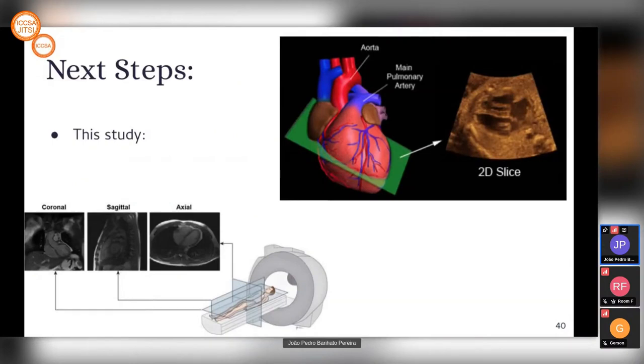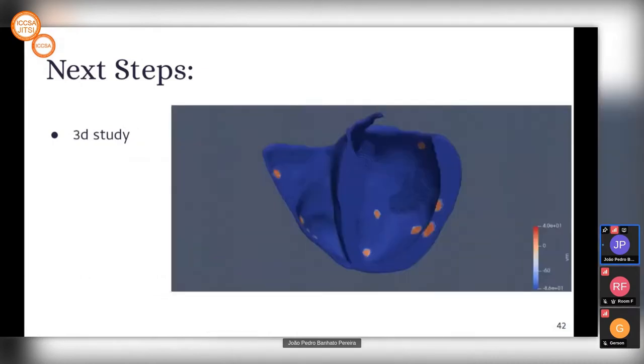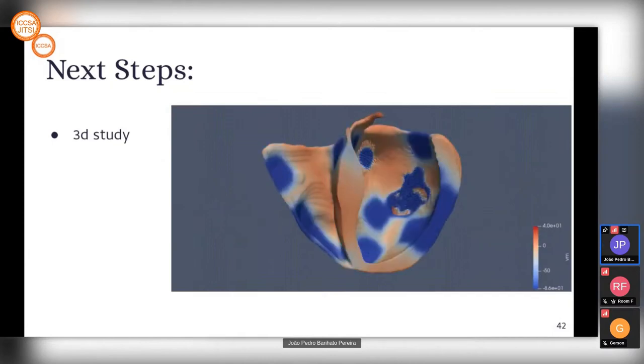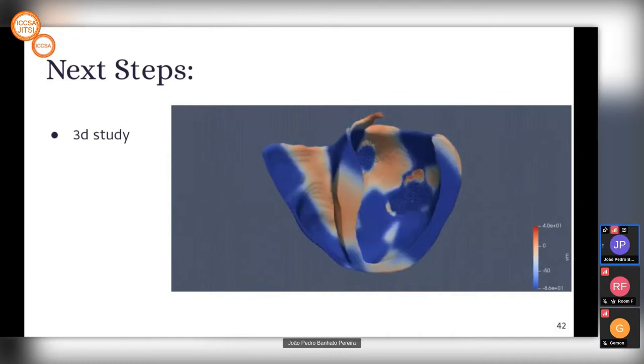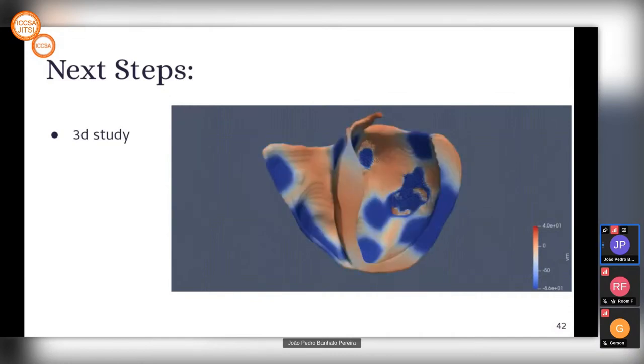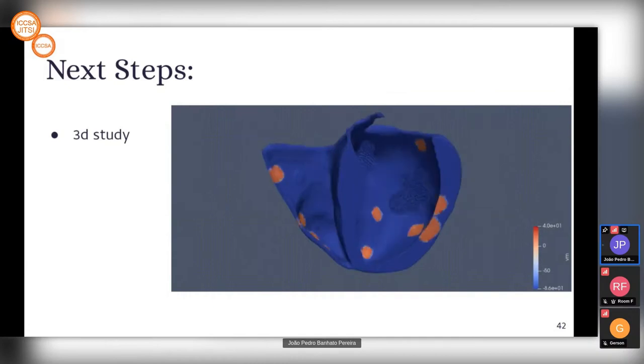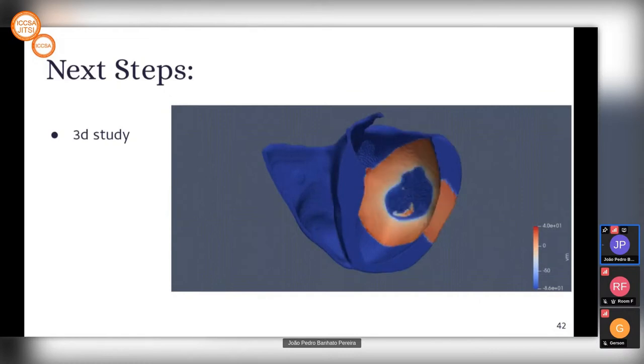This study used 2D slices of the heart to model our tissue. The tissue we represented was a two-dimensional representation of the heart. What we want to do next is represent the three-dimensional study by taking many slices of the heart from the MRI data we already have. We can build a three-dimensional model of the patient's heart and do a three-dimensional study that can give us more information.